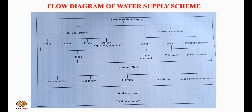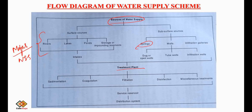This is a flow diagram of the water supply scheme. First, the sources are identified — surface or subsurface. Surface sources are the major contribution to any water supply scheme. From the intake, water goes to the treatment plant, where various units such as sedimentation, coagulation, filtration, and disinfection are applied. Then it goes to the service reservoir, and finally it is distributed to the public. These are the components of any public water supply system.